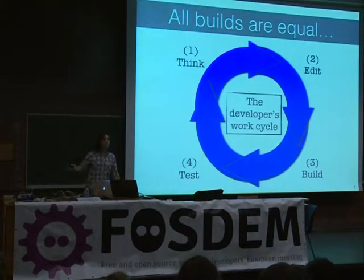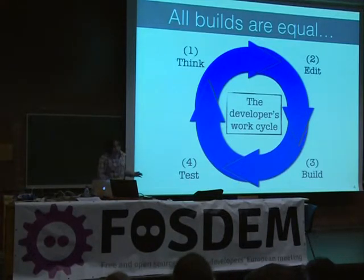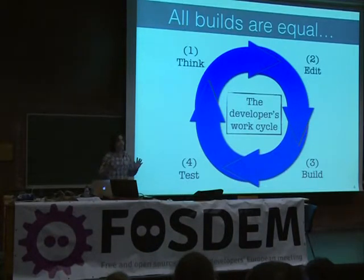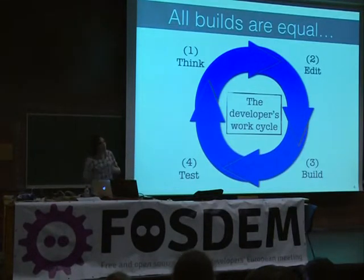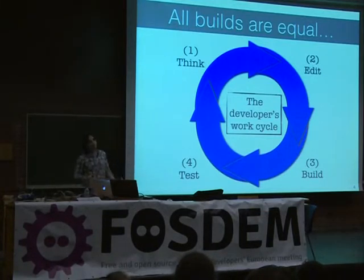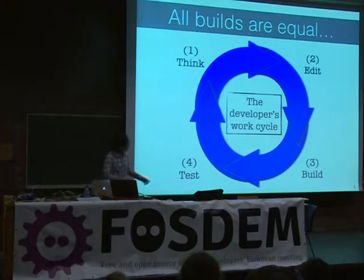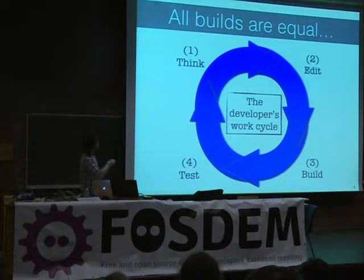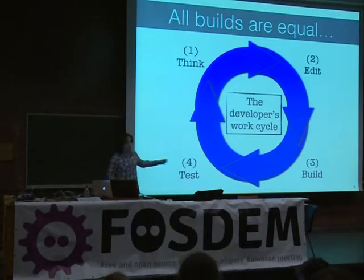Since the 1970s, we've decided that this is the working model that developers follow. We first start out looking at the source code and thinking about how we want to edit the code, how we want to implement something. Then we edit the code to put that into a realization. Then we execute the build system — we take the stuff that we changed and integrate it into deliverables so that we can test our change. But under this model, all builds are equal — it just looks like the third step in a four-step process.